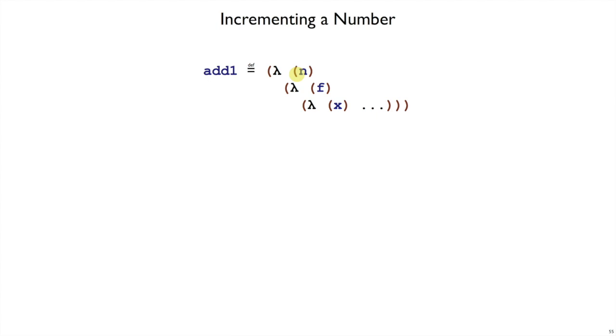Fortunately, we can exploit the way that n is encoded, because we know that this number n is actually encoded as a function that takes f and another x, and it will apply this f to x, n times. What we want to do, since it's add1, is we want to apply f to x, n plus 1 times. That's easy now, because we've already applied f n times. We just apply it one more time, and now we've applied f, n plus 1 times to x.